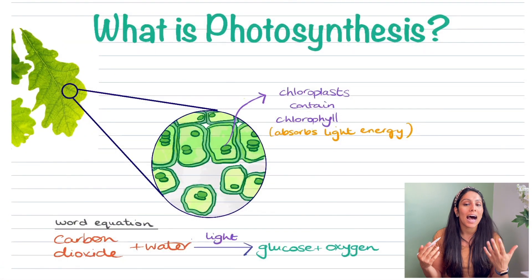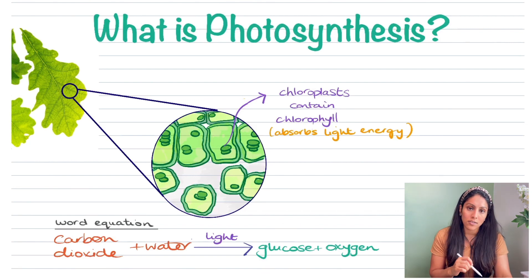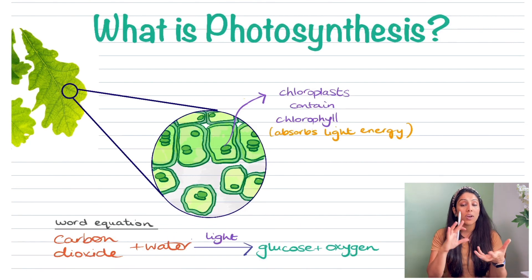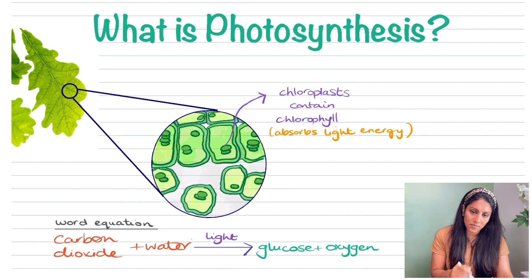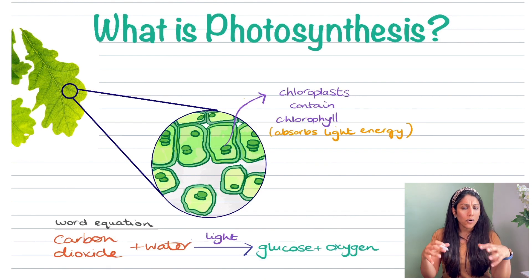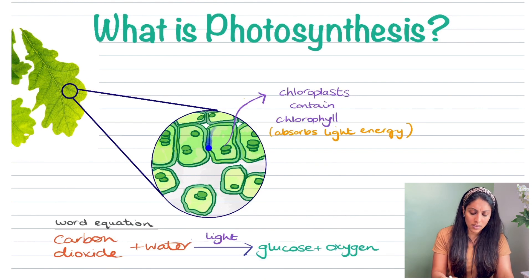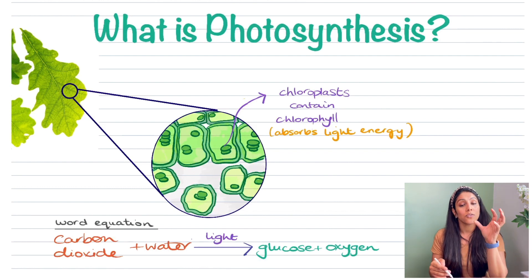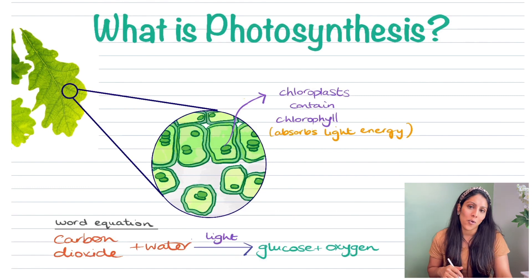Photosynthesis is the process by which the plant makes glucose. It uses carbon dioxide and water — the reactants — which react together in the presence of light to make the products glucose and oxygen. This all happens in the leaf, within the cells, and within the cells you have chloroplasts, which are the organelles that contain a pigment called chlorophyll. The word rate means how fast something happens — the speed at which it occurs.